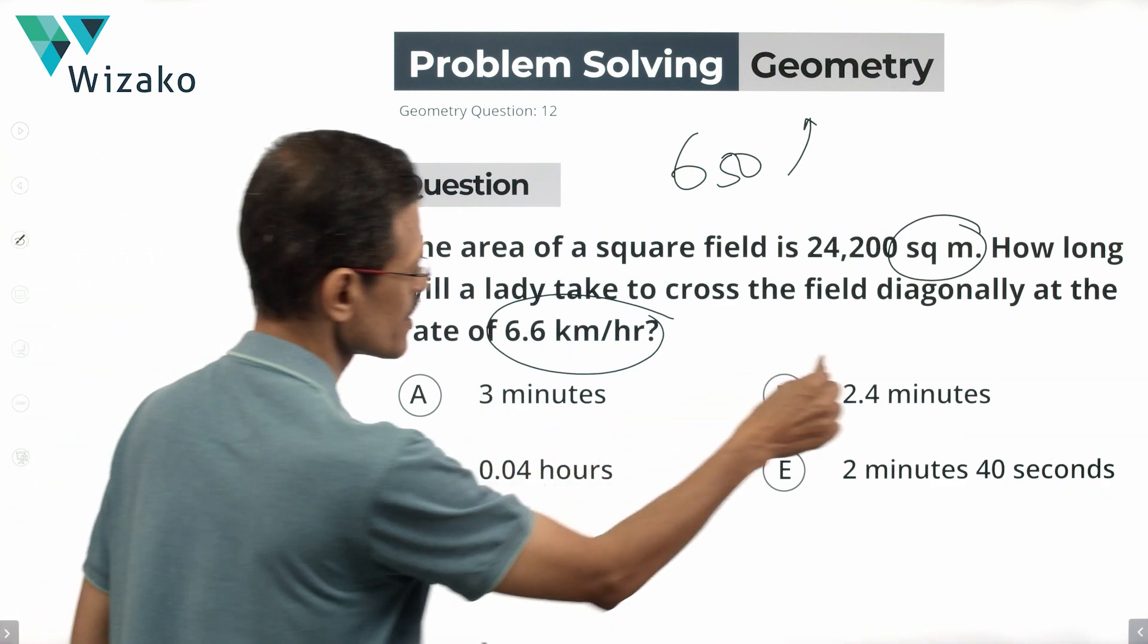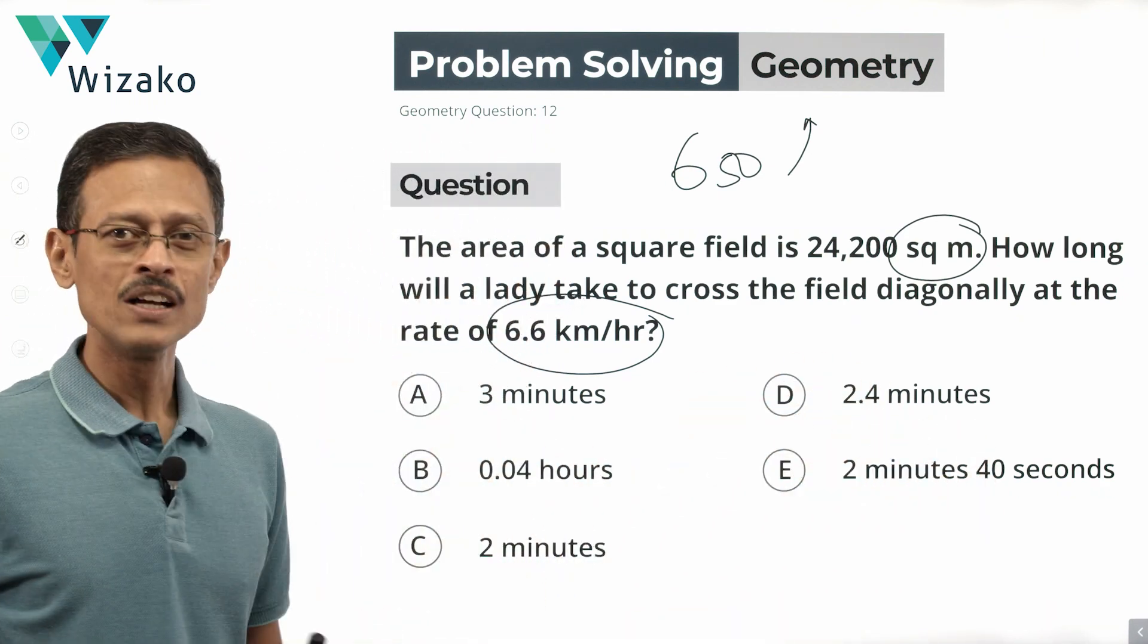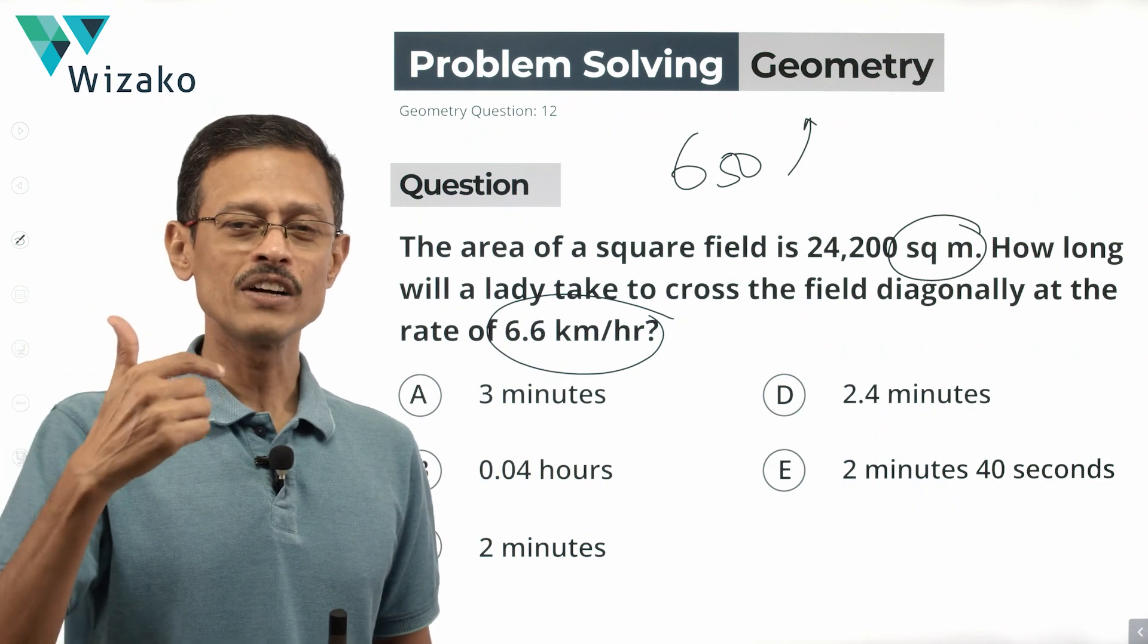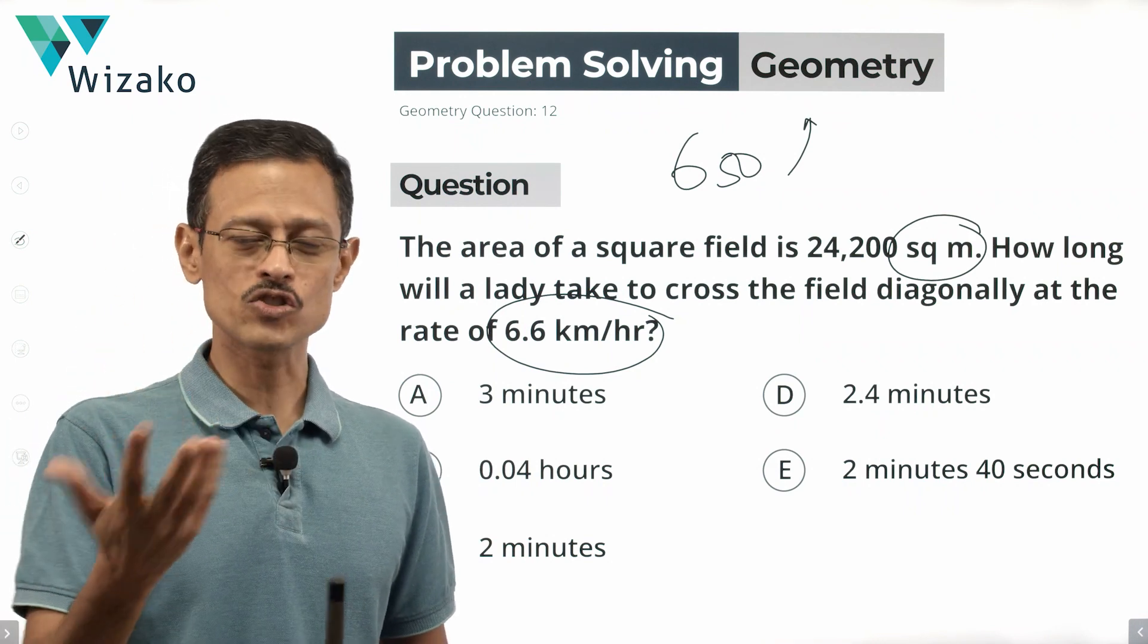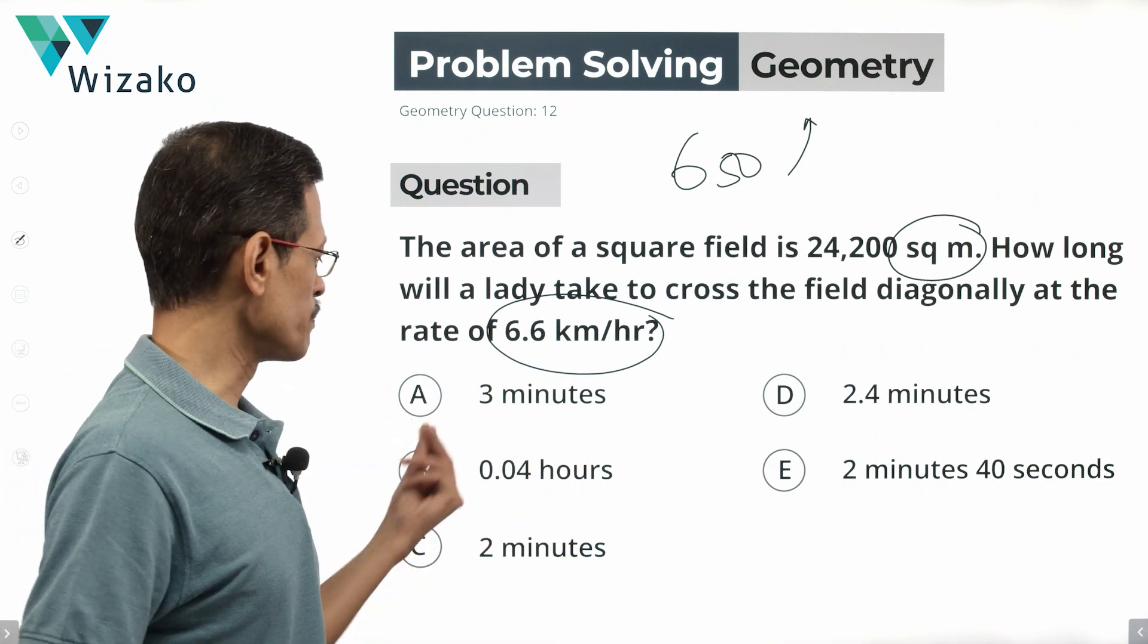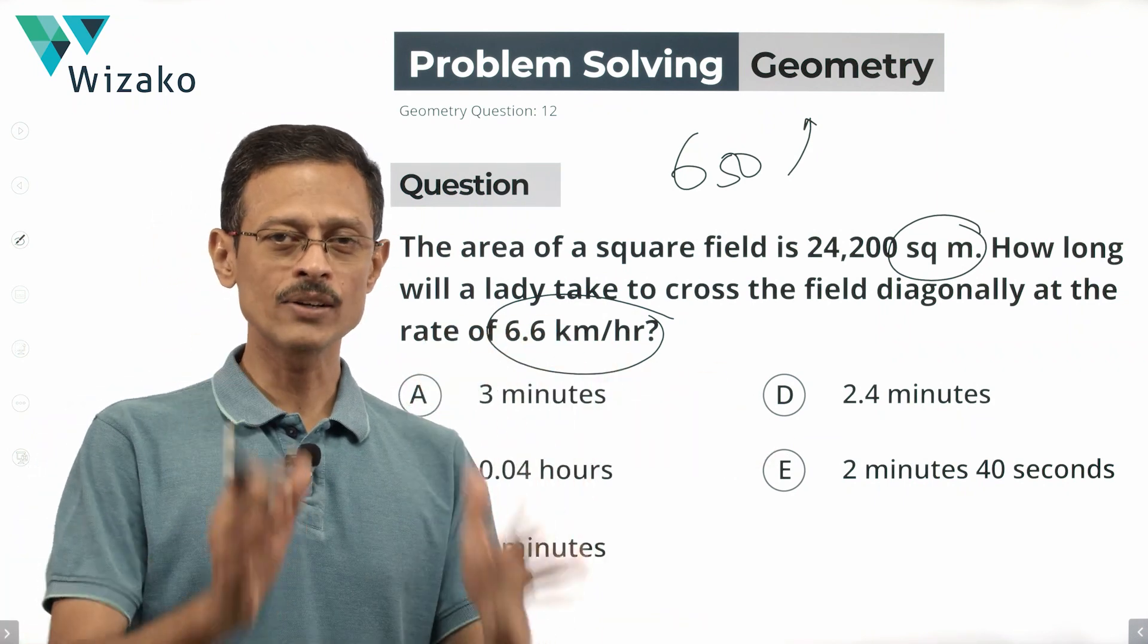And let's look at the answer options. It's given in terms of minutes, minutes, minutes and seconds, minutes and hours. So at some level there is also a conversion of units of time from hours to minutes probably. If answer option B is not the answer, we need to do the conversion. Let's take a look at this.